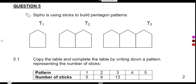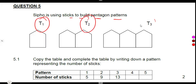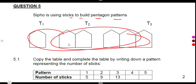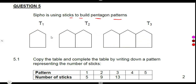Given question number five, we are given that Sipo is using sticks to build pentagon patterns. This is our condition: T1, T2, and T3 as the given patterns — pattern one, pattern two, and three. So we have to study the presentation and determine how many sticks we have in each pattern.